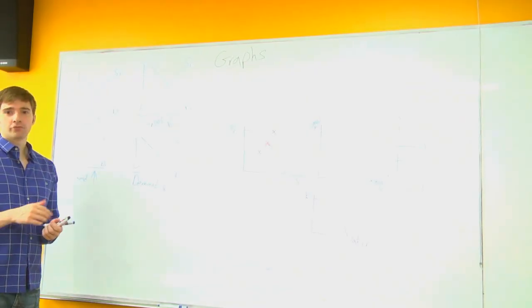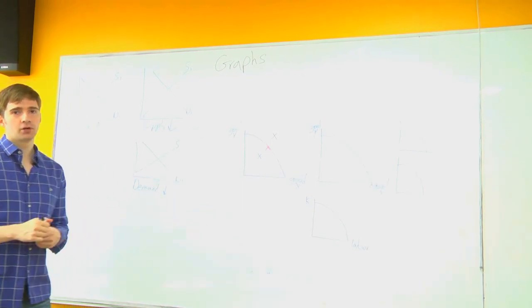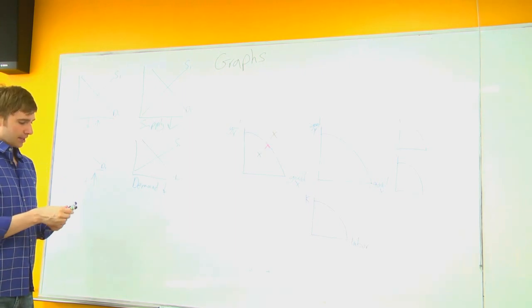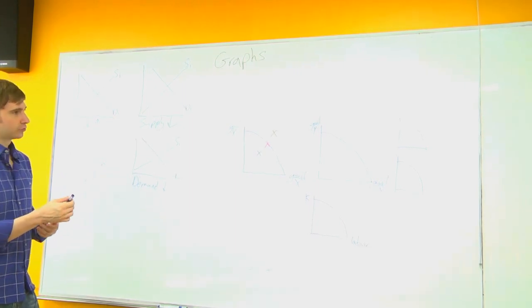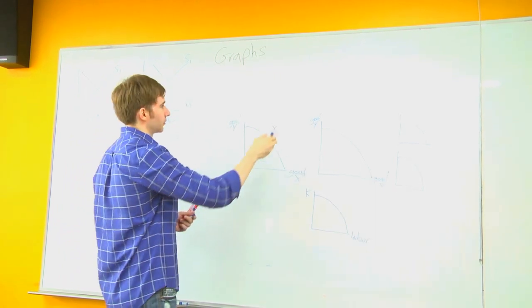So today we're going to talk about graphs. We're going to talk about how to move the lines on our graphs, what causes those shifts. We're going to talk about supply, demand, and then later we'll move on to the production possibility frontier for macroeconomics.